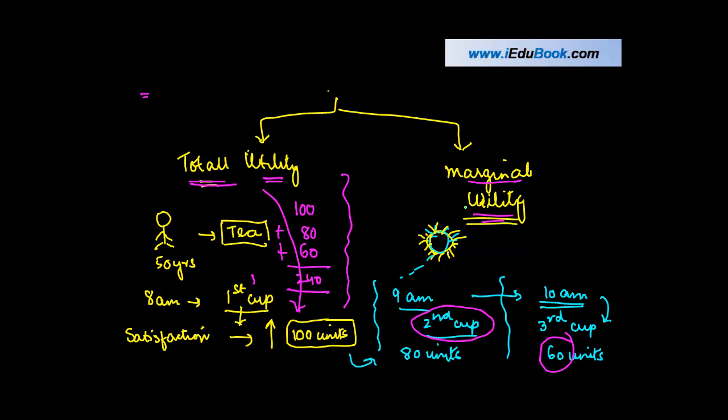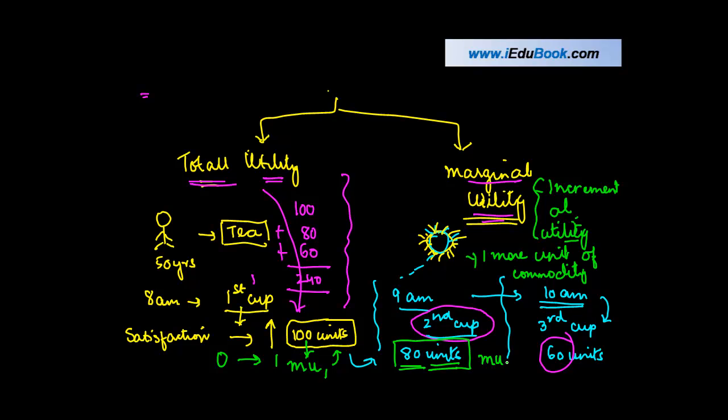When we talk about marginal utility, what we are saying is how much is the incremental utility derived by a person from consumption of one more unit of commodity. So when he consumed the first one, he got 100. When he consumed the second, how much is the additional utility that he got? He got 80 units. So as he moved from 0 to 1, the incremental utility that he got was 100 units. So we say that marginal utility 1 is 100 units. Let's say the incremental utility he got from the second one was marginal utility 2, and this is marginal utility 3. So marginal utility refers to the incremental utility, increase in the total utility by consumption of one more unit of commodity.